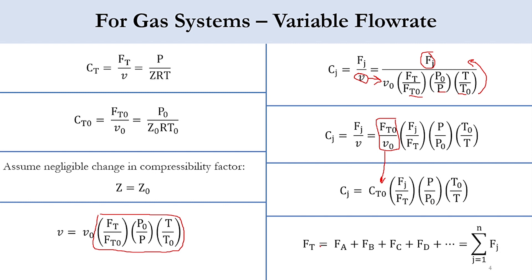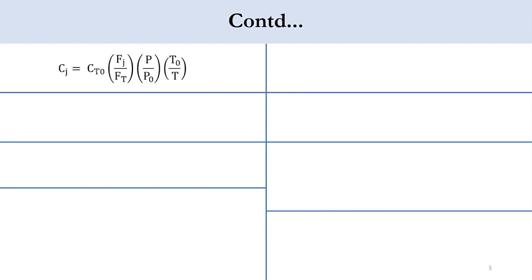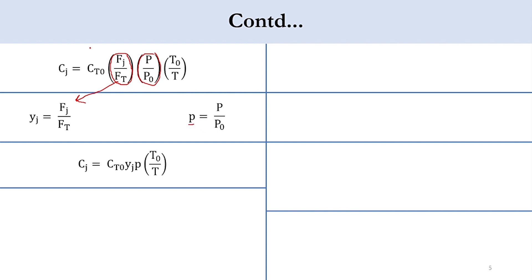The total flow rate Ft equals the sum of all individual flow rates: FA plus FB plus FC and so on. We can simplify Fj/Ft as y_J, the mole fraction of J. We represent P/P0 as the factor p (outlet pressure over inlet pressure). So C_J equals Ct0 times y_J times p times (T0/T).